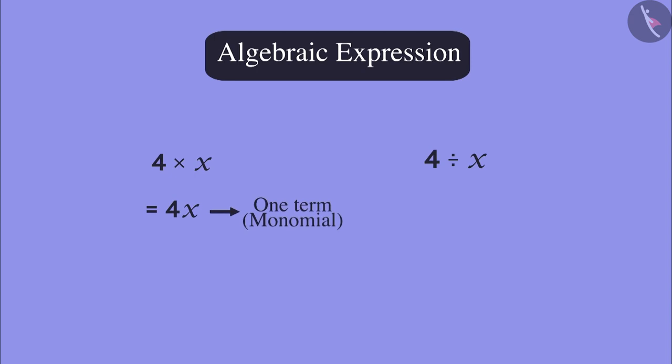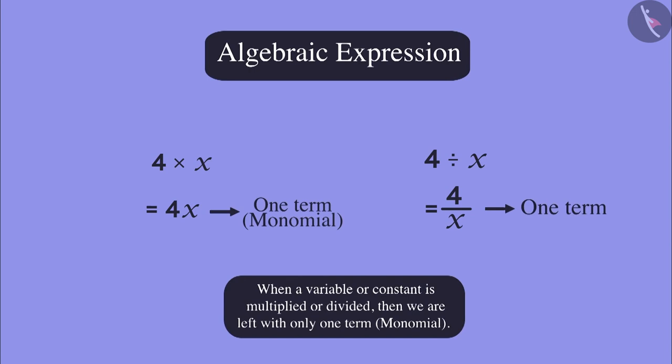Then what about 4 divided by x? How many terms are there in it? Here, a number is divided by a variable. But still, it will be considered as one single term. When variables or constants are multiplied or divided, then it is considered as one term.